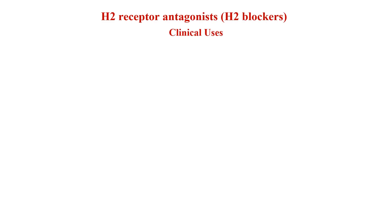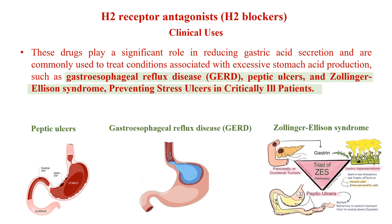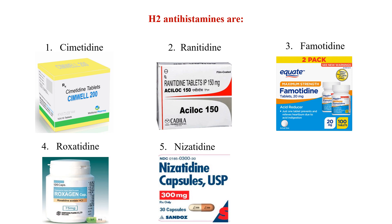Now that we know how they work, let's see where H2 receptor blockers come to rescue in the medical world. These drugs play a significant role in reducing gastric acid secretion and are commonly used to treat conditions associated with excessive acid production, such as gastroesophageal reflux disease, peptic ulcers, Zollinger-Ellison syndrome, and preventing stress ulcers in critically ill patients. The H2 antagonists include famotidine, cimetidine, ranitidine, roxatidine, and nizatidine. Four — cimetidine, ranitidine, famotidine, and roxatidine — are available in India.